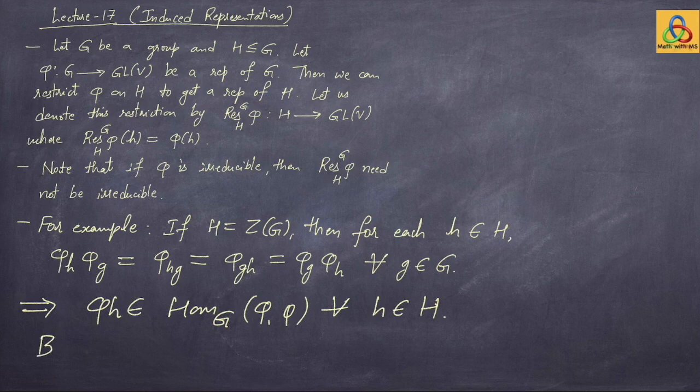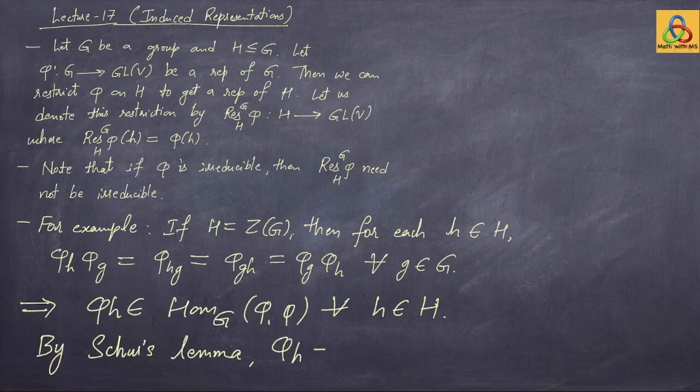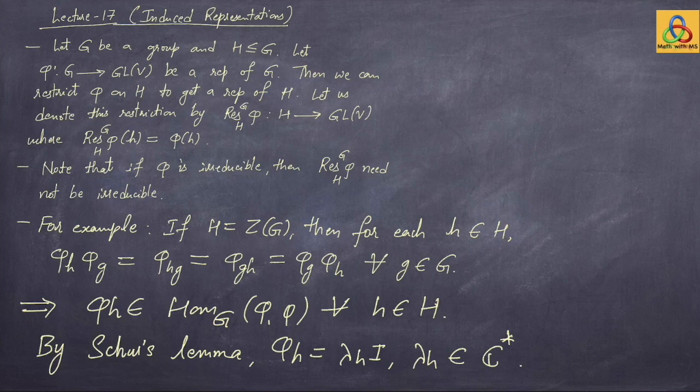By Schur's Lemma we see that phi of h is just lambda(h) times the identity, for some lambda(h) in C* because phi(h) is invertible. Therefore if you apply phi(h) on any vector of your underlying representation space, it is just a scalar multiple of that vector.